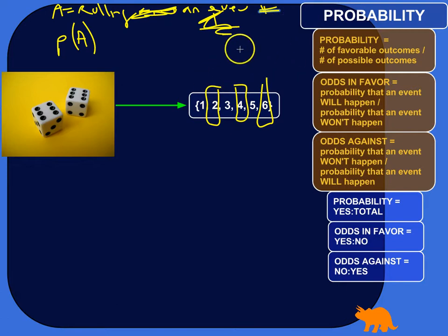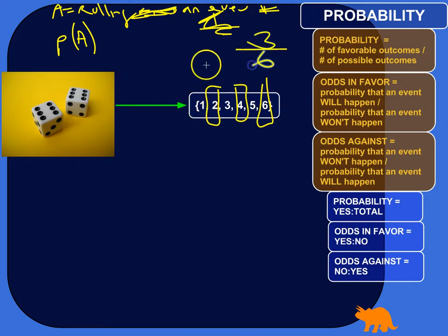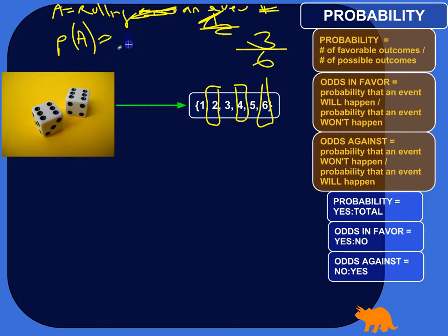How many favorable outcomes are there? There's one, two, three — three different even numbers on a regular six-sided die. So the probability is the number of favorable outcomes over the number of possible outcomes. There are six different numbers you could roll, so the probability of rolling an even number is three over six, which as a decimal is 0.5 — a half. Three is half of six, so 0.5.